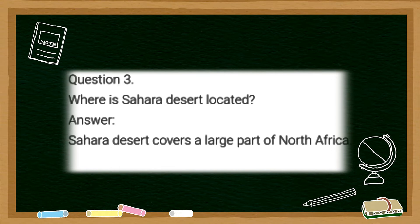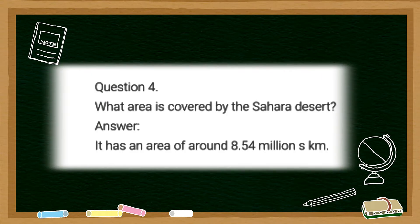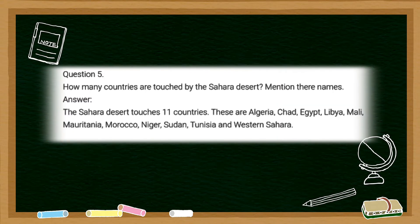The Sahara desert covers a large part of North Africa. The fourth question is: what area is covered by the Sahara desert? The answer is it has an area of around 8.54 million square kilometers. The fifth question is: how many countries are touched by the Sahara desert? The answer is the Sahara desert touches 11 countries.